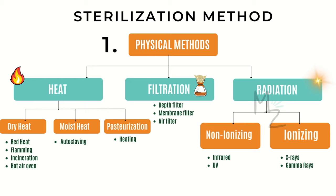Moist heat sterilization — usually autoclaving — is the most frequently used method of sterilization. It is done at 121°C and held for 15 to 20 minutes. To test the effectiveness of the autoclaving process, spore-forming organisms such as members of the genus Clostridium can be used for that purpose.